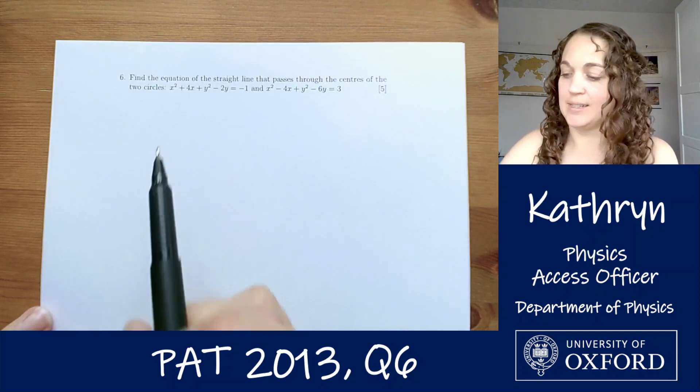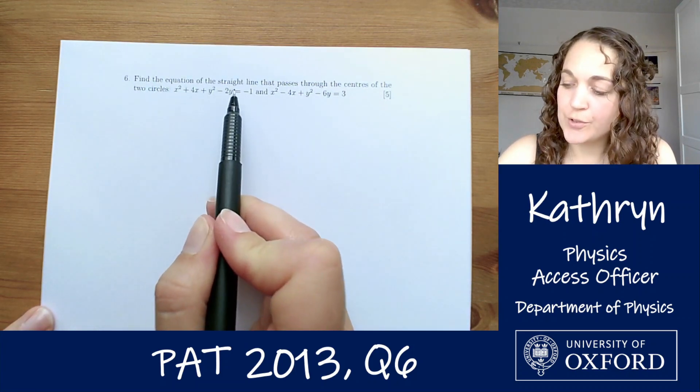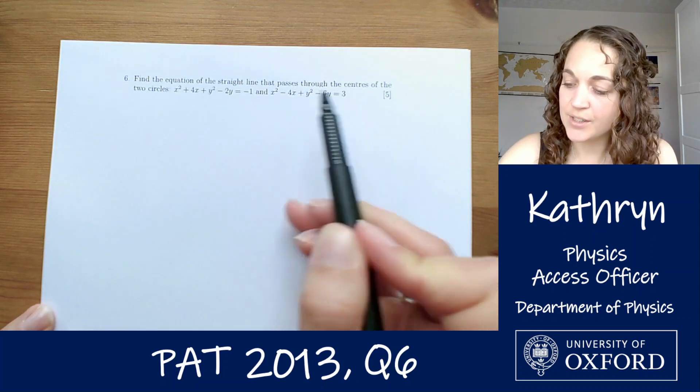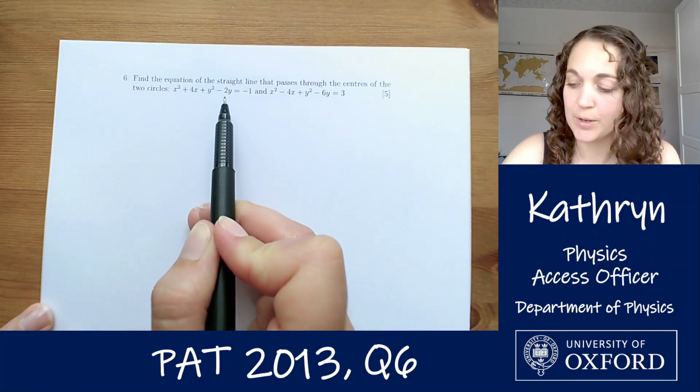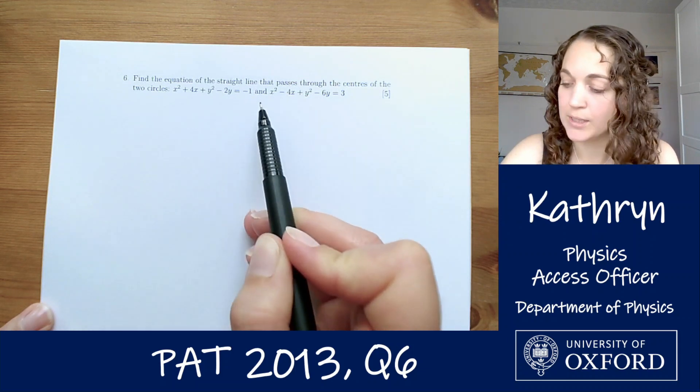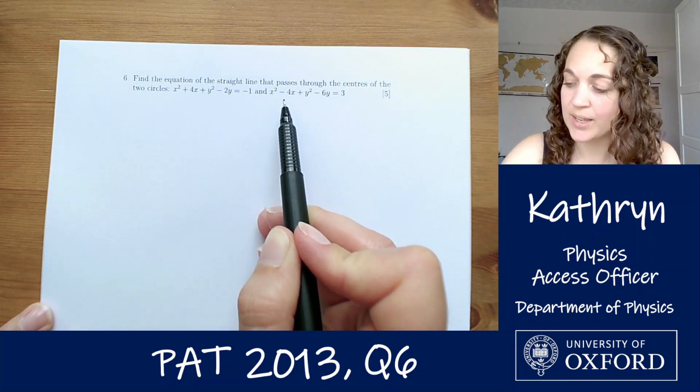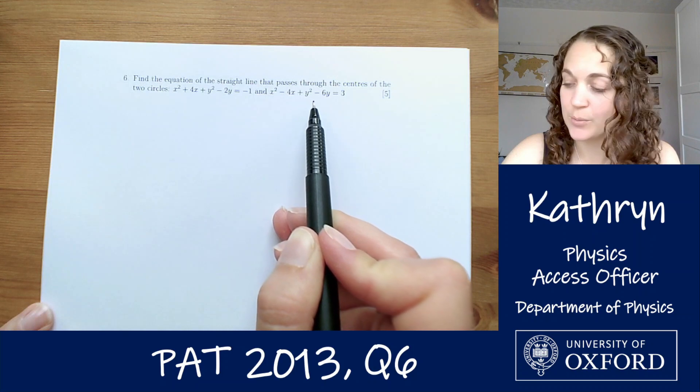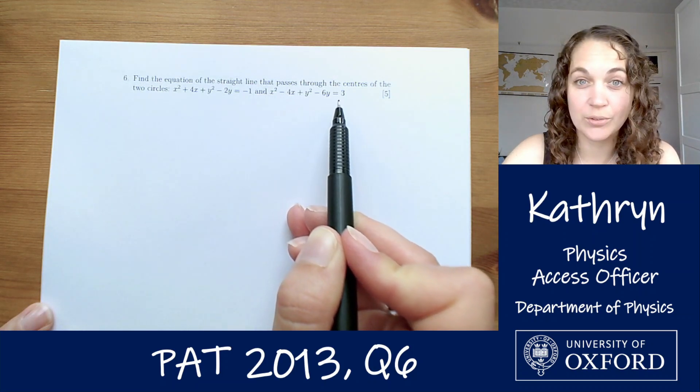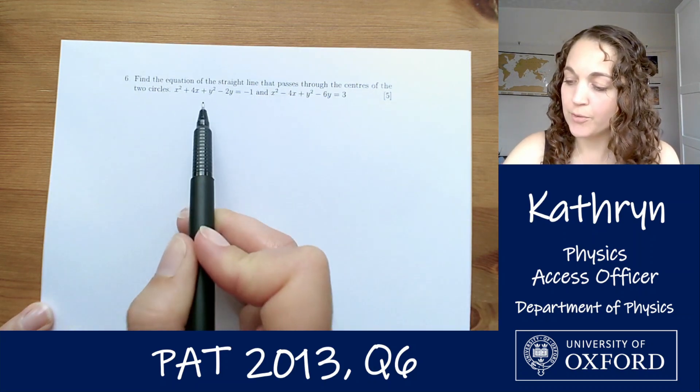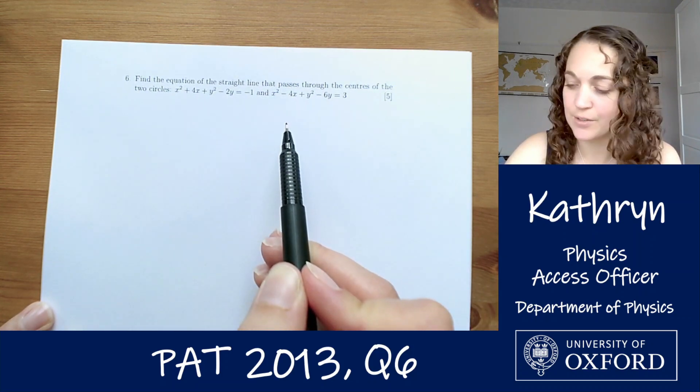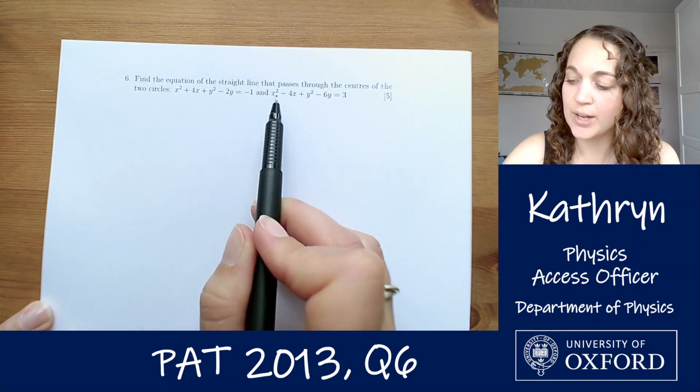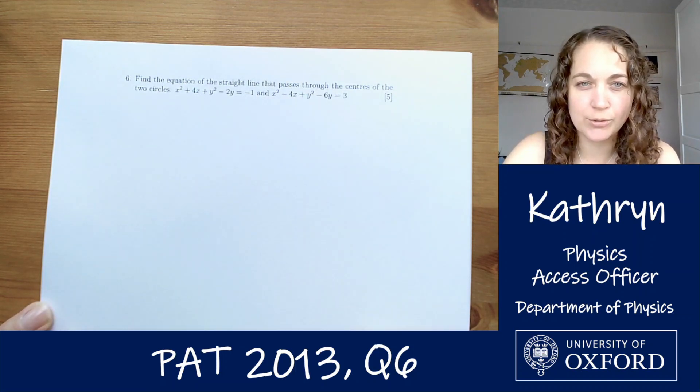That question goes like this. Find the equation of the straight line that passes through the centres of the two circles x squared plus 4x plus y squared minus 2y equals minus 1 and x squared minus 4x plus y squared minus 6y equals 3. So we've got two circles, we're going to find the centres of them and then find the equation of the straight line that passes through those two centres.